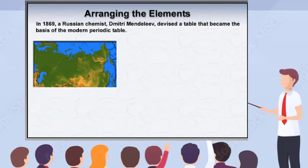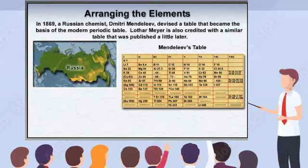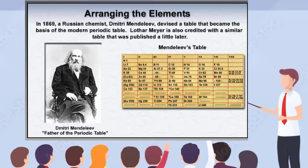In 1869, the Russian chemist Dmitry Mendeleev organized elements into a table that became the basis of the modern periodic table. A German chemist, Lothar Meyer, also published a similar report, but it came a bit later than that of Mendeleev. Consequently, Mendeleev came to be known as the father of the periodic table.